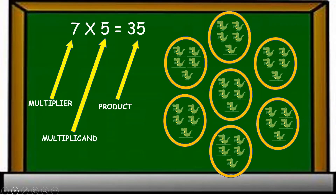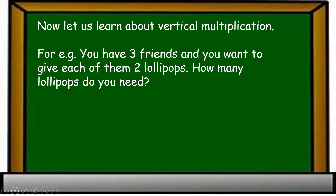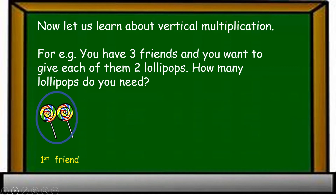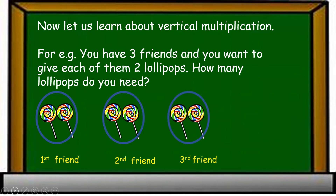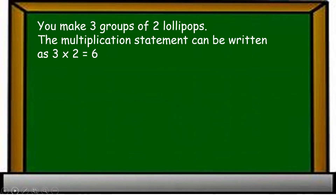Now let us learn about vertical multiplication. You have three friends and you want to give each of them two lollipops. The first friend has two lollipops, the second friend has two lollipops, and the third friend has two lollipops. Here we make three groups of two lollipops each, which makes six lollipops in all. The multiplication statement is written as three into two is equal to six.